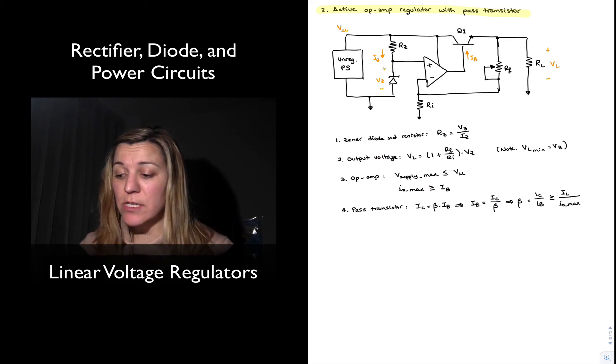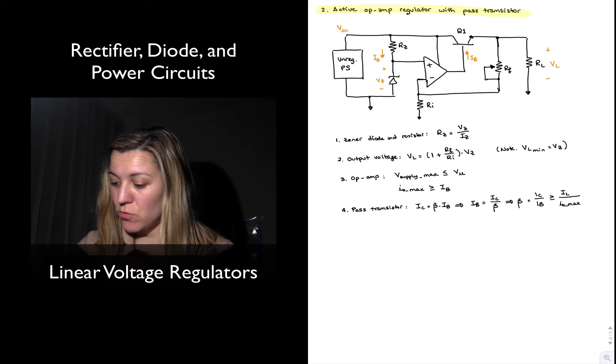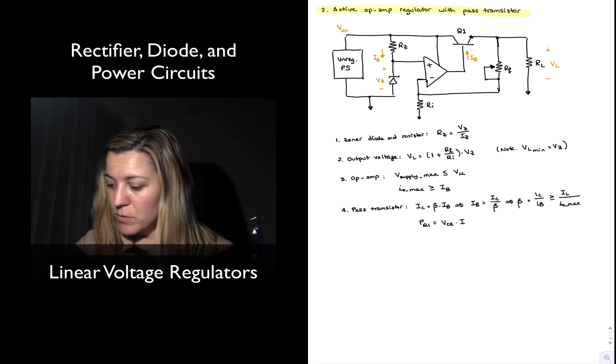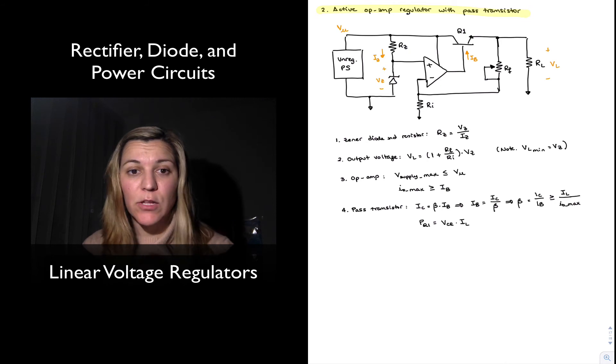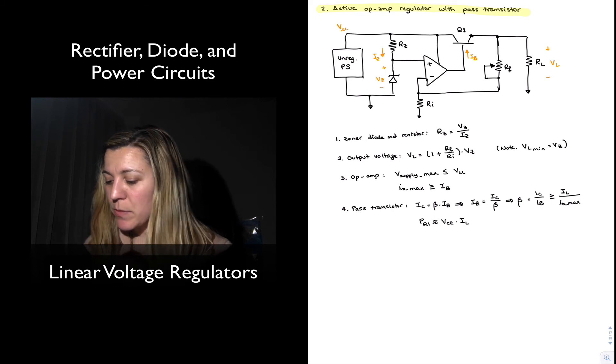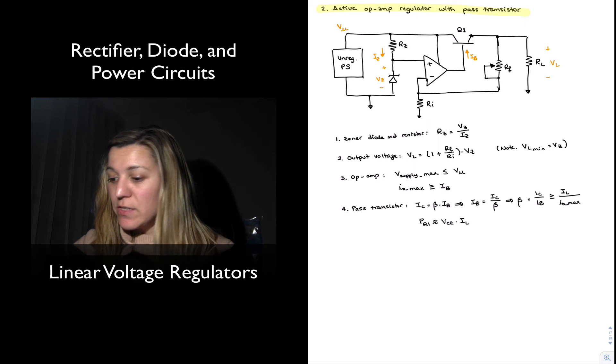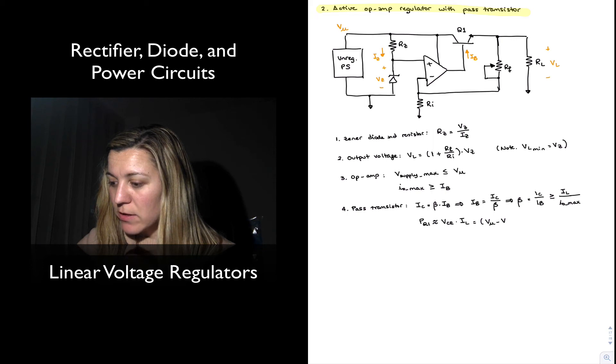Another important consideration for the transistor is that it is going to be dissipating a lot of power, and so we need to make sure that we are not exceeding the maximum power ratings for the transistor. And so the power for transistor Q1 is going to be equal to roughly VCE times the load current. Again, we are ignoring or neglecting the current that's flowing through RF and RI, but we could calculate that if we wanted to, but this is roughly what the power dissipation for the transistor is going to be equal to. I'll just make that an approximately equal. And VCE is going to be equal to the difference between the unregulated voltage and the output voltage VL times IL.